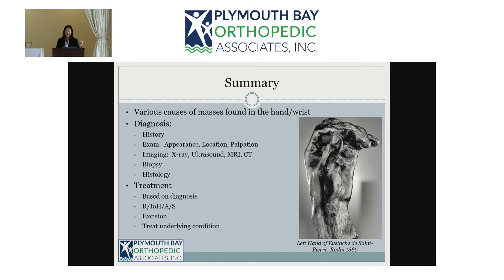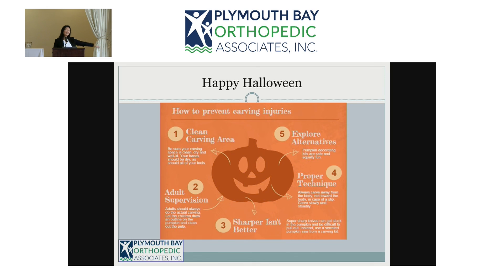So I've quickly gone through a bunch of bumps, lumps, and masses in the hand. Diagnosis for any of these is similar to any orthopedic issue: history, exam, radiologic findings, biopsy at times, and histology from the pathologist. Treatment is based on the diagnosis but usually involves rest, ice or heat, anti-inflammatories, and sometimes splinting. Many masses can be excised, and some require treating the underlying condition. And my annual plea: please be careful carving pumpkins — no one wants to cut their finger off or have a flexor tendon injury.